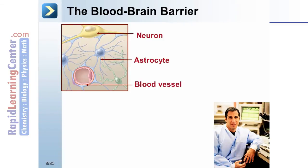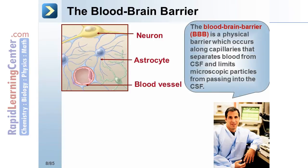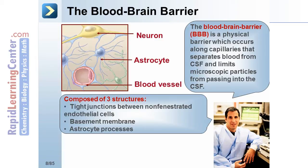During development, the placenta is important for protecting the developing fetus from harm. In the adult, it is the blood-brain barrier that protects the brain. The blood-brain barrier is a physical barrier which occurs along capillaries that separates blood from cerebrospinal fluid and limits microscopic particles from passing into the CSF. It is composed of three structures: tight junctions between non-fenestrated endothelial cells, the basement membrane, and astrocyte processes.